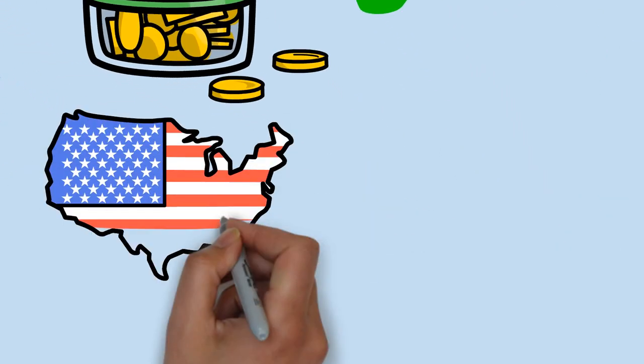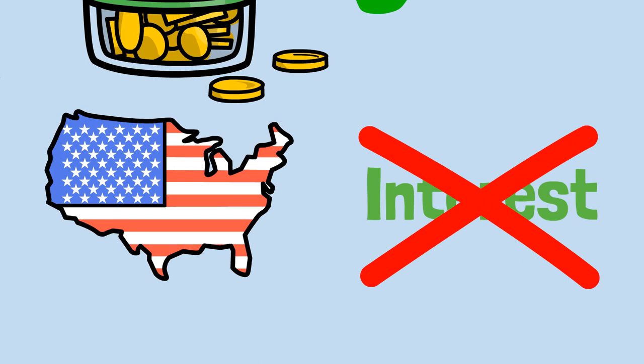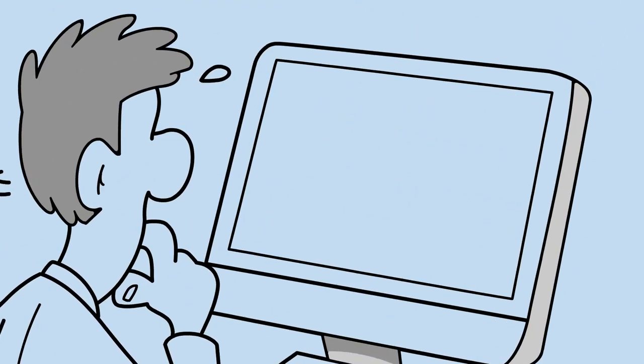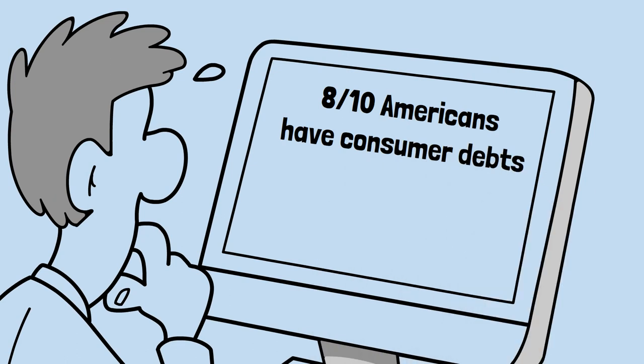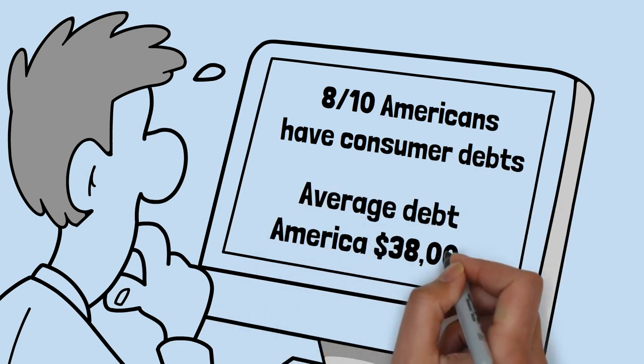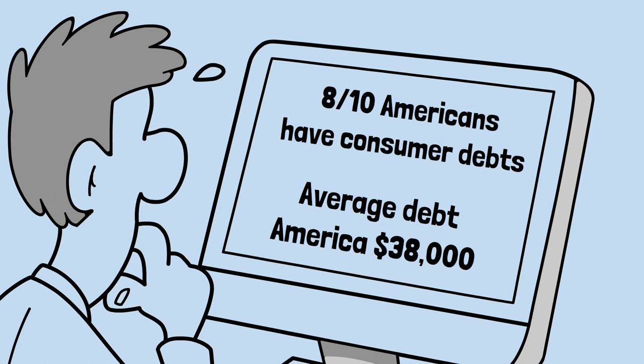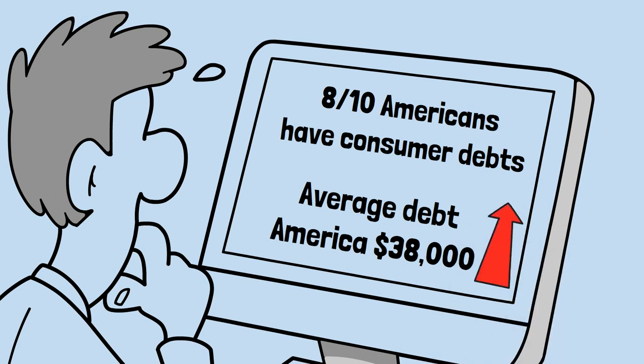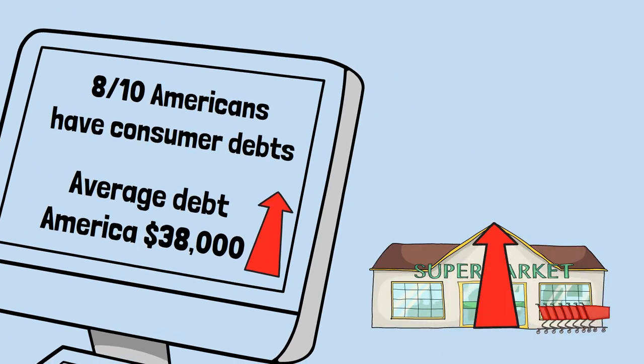Many Americans have interest working against them, which holds them back from becoming wealthy. In a 2020 study, 8 in 10 Americans had some form of consumer debts, and the average debt in America, excluding mortgage debt, was $38,000. These numbers have likely increased since this study was conducted. Now there's high inflation and a looming recession.